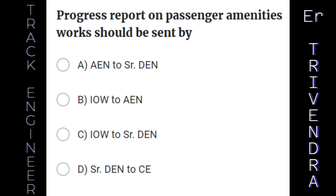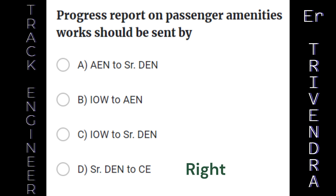Progress report on passenger amenities works should be sent by: A. AEN to Senior Divisional Engineer. B. IOW to AEN. C. IOW to Senior Divisional Engineer. D. Senior Divisional Engineer to Chief Engineer. The right answer is: Senior Divisional Engineer to Chief Engineer.